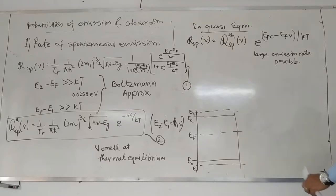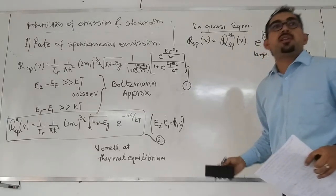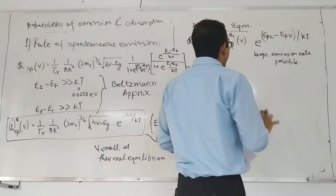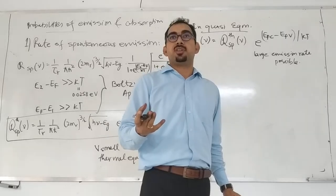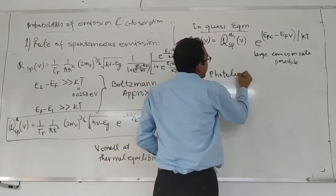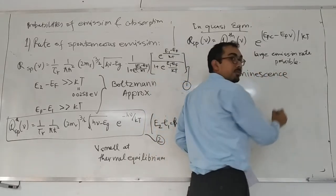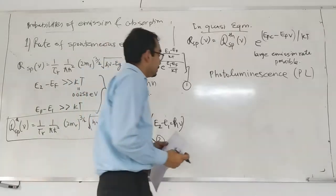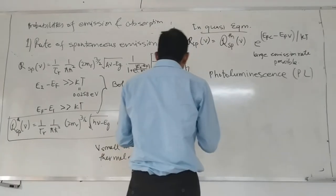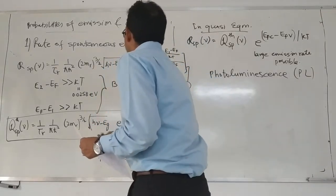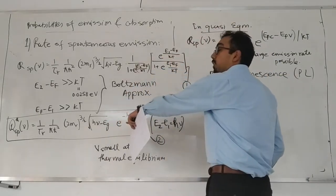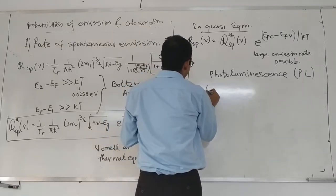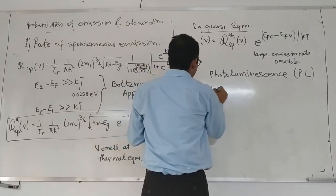I have promised to derive the line shapes of emission — how the emission line would look like. In the photoluminescence process, this is called photoluminescence or emission process, in short PL. You will hear PL spectroscopy everywhere. In this equation, I can rewrite R_sp(ν) as 1/τ_r times 1/(π h-cross squared) times (2m_r)^(3/2) times... let me multiply and divide by e raised to minus E_g over kT.